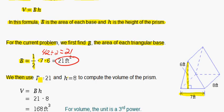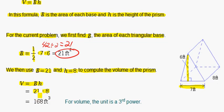We then use B equals 21 and h equals 8 to compute the volume of the prism. V equals B times h. So B is 21 and h is 8. 21 times 8 is 168 feet cubed.